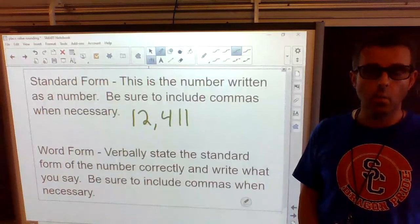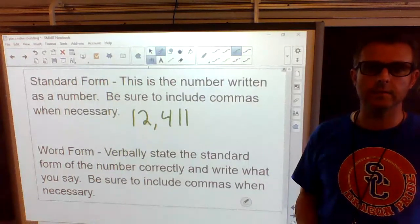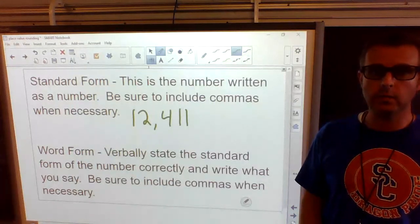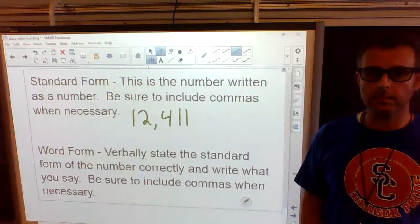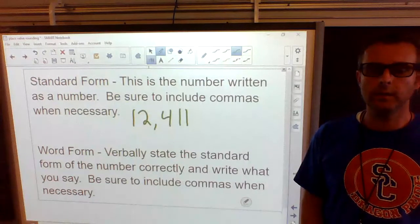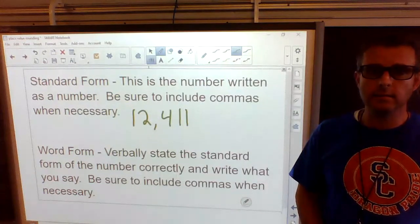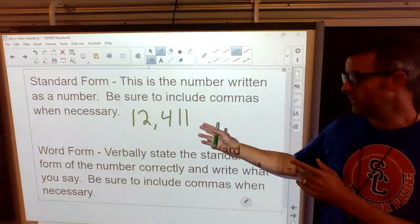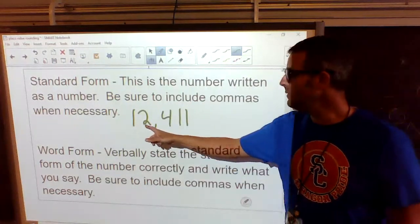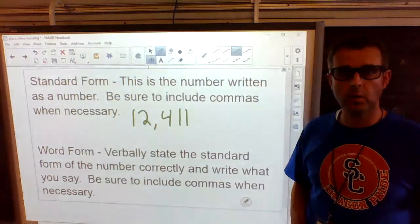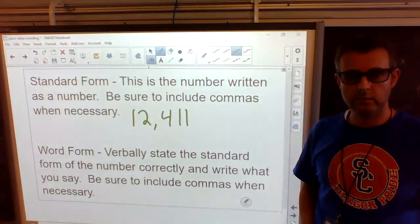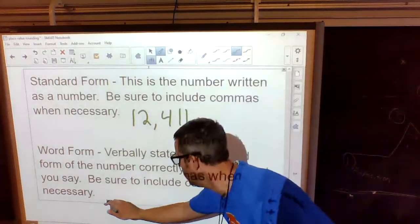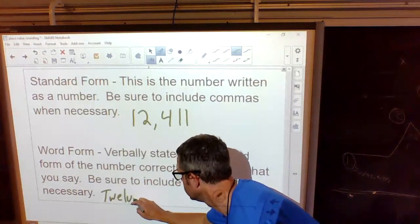Word form. Word form is to verbally state the standard form of the number correctly and write what you say. Be sure to include commas when necessary. So when it's in word form, you are going to verbally say it and then write what you say. So let's look at this number that we just said. We said that this number is 12,411.